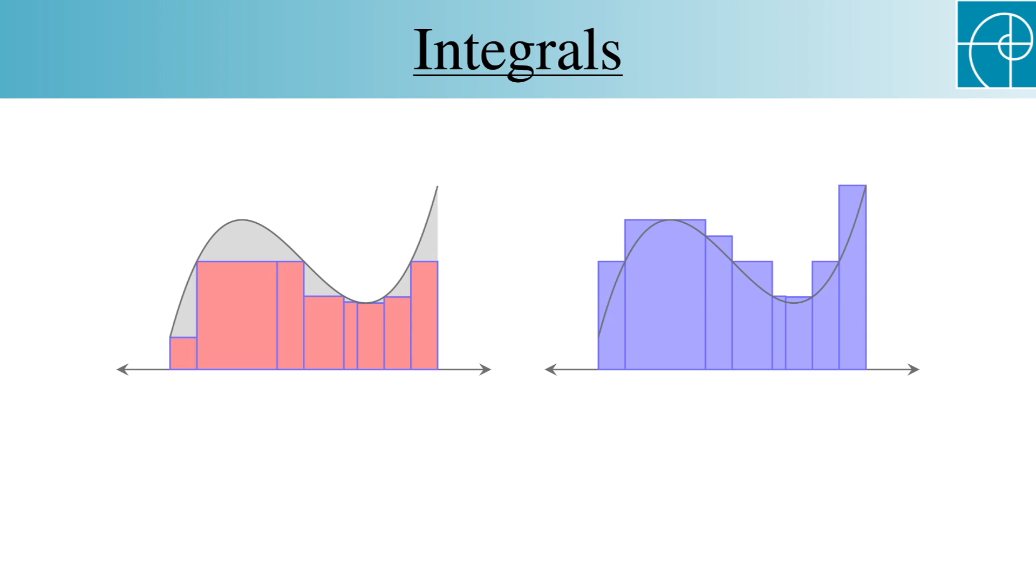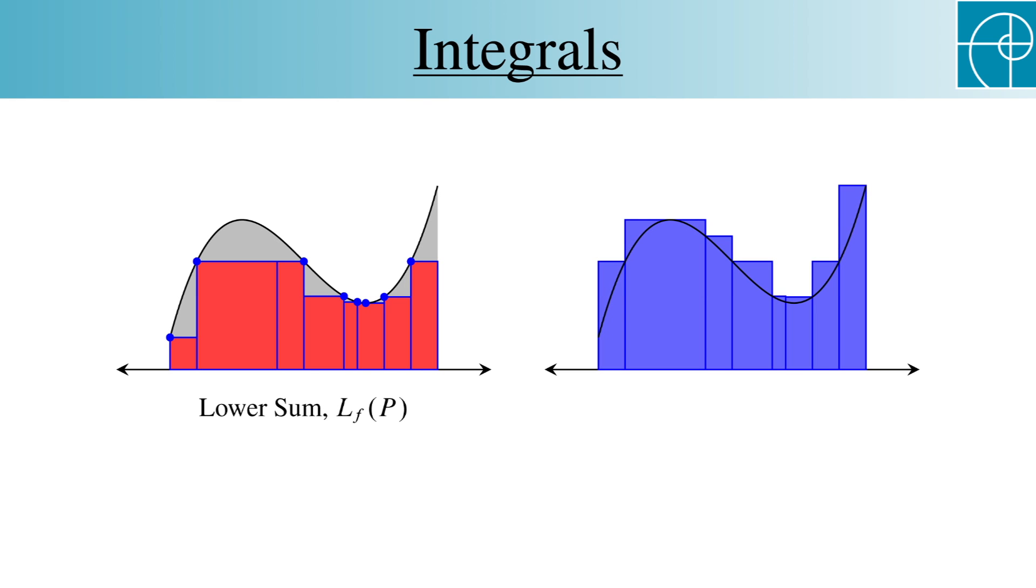Remember these two pictures. The one on the left represents the lower sum with respect to the given partition, in which the heights of the rectangles are determined by the minimum values of the function in the subintervals, and the one on the right represents the upper sum, which uses the maximum values. We'll use these in the next definition.